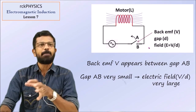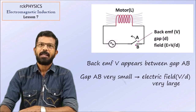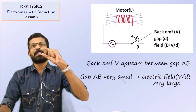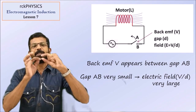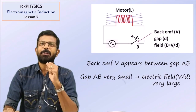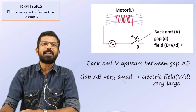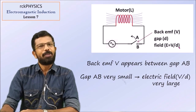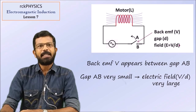Where V is the back EMF appearing across the terminals. When the switch is being opened, the contact between the terminals is very, very small. The D value is very small. Even if V is not very large, the voltage value may be small, but D is very small.